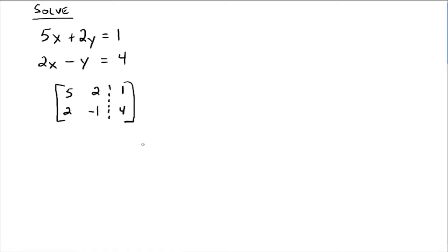The more of these you do, the faster you will get. Now, our goal is to make this first entry right here a 1. So how do you make a 5 into a 1? Well, you multiply by the reciprocal. So we'd have 1 fifth times row 1 gives you a new row 1.